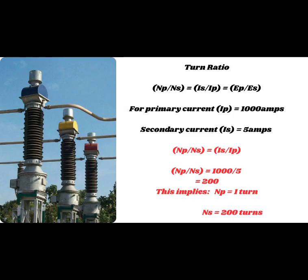For instance, if a current transformer is built to monitor a 1000 amps primary current, the turns ratio would be 1000 is to 5. This implies the secondary must have 200 turns. So this is how the winding configuration is made to meet up the required current expectations.